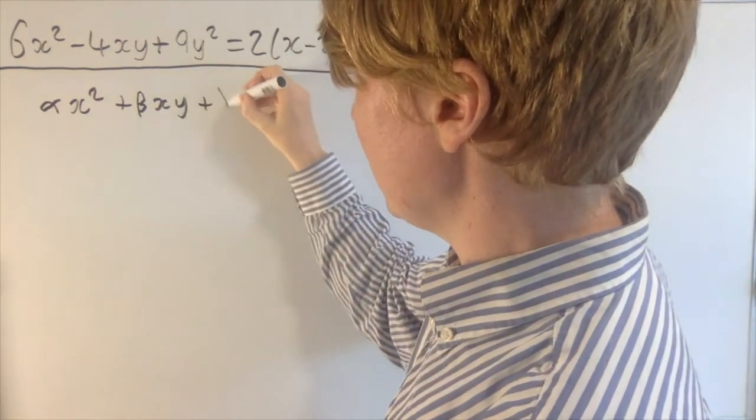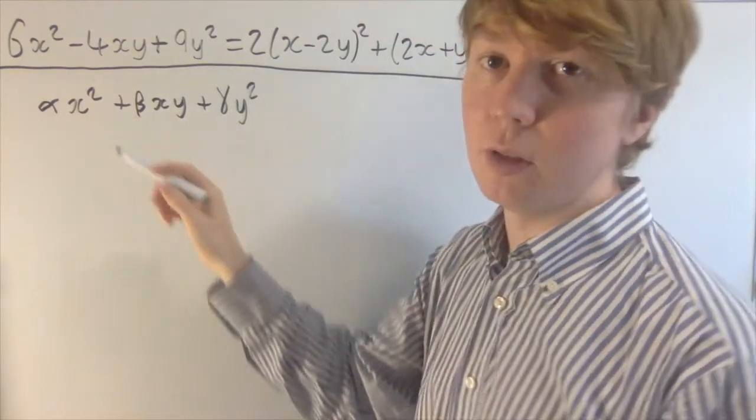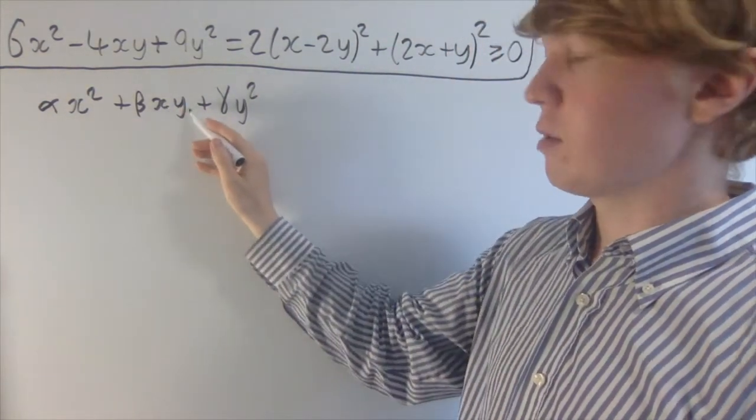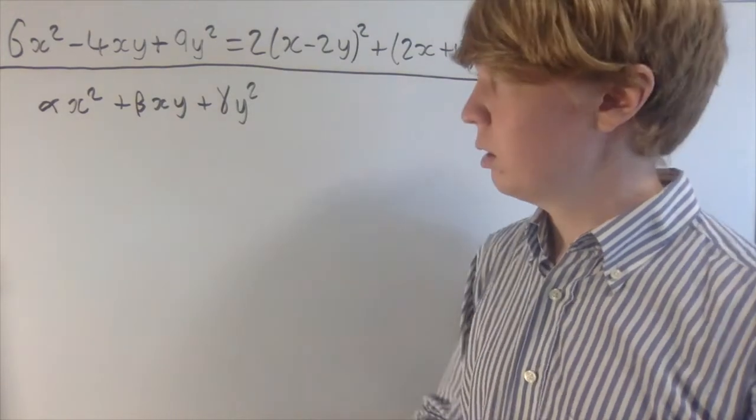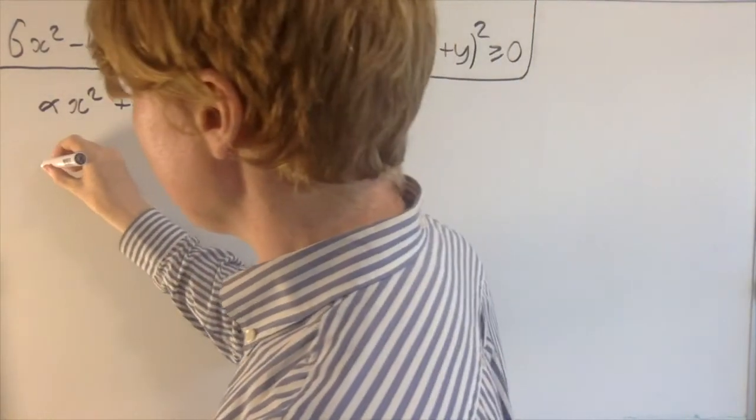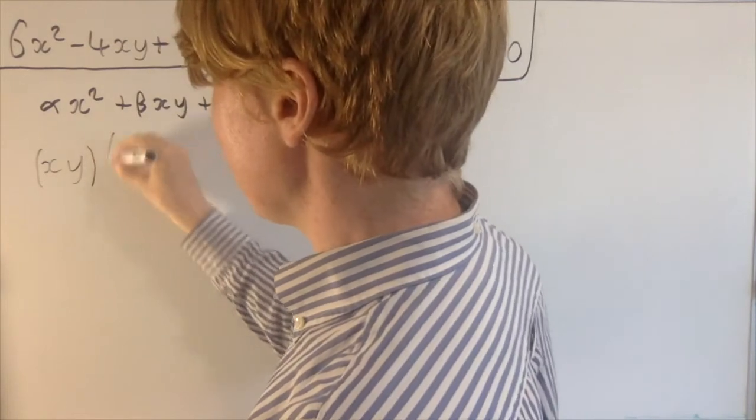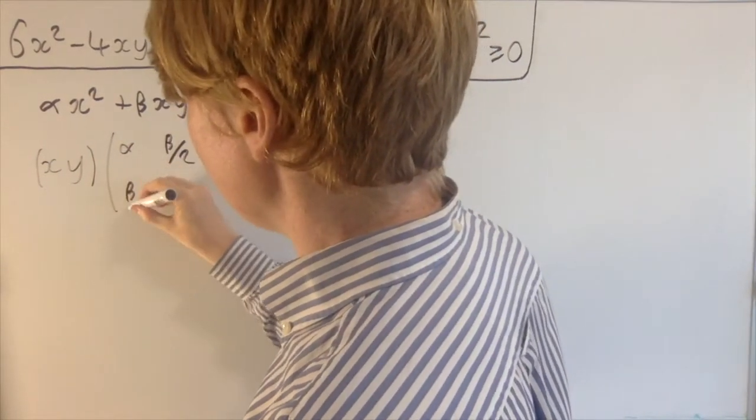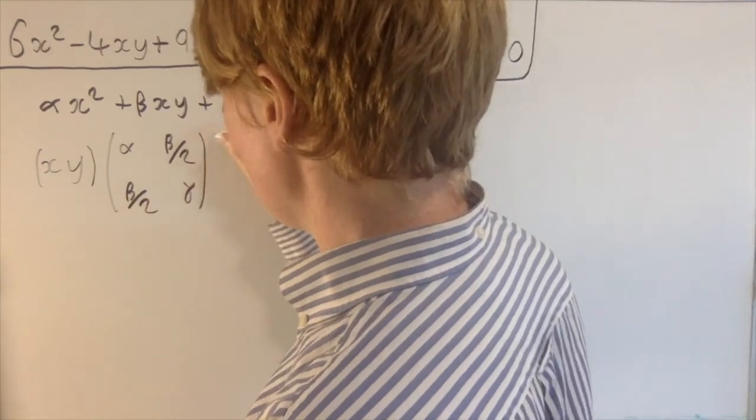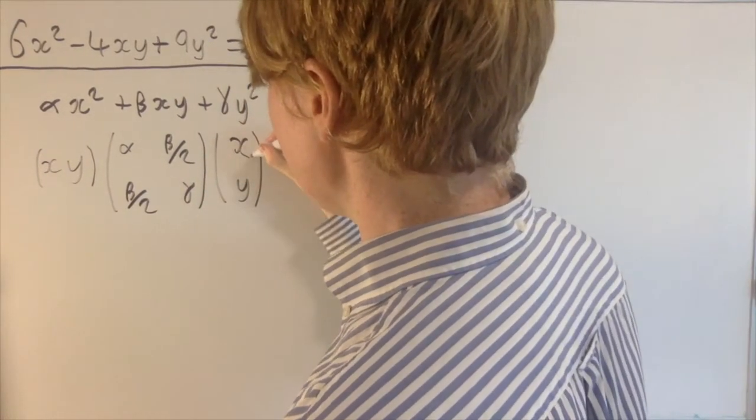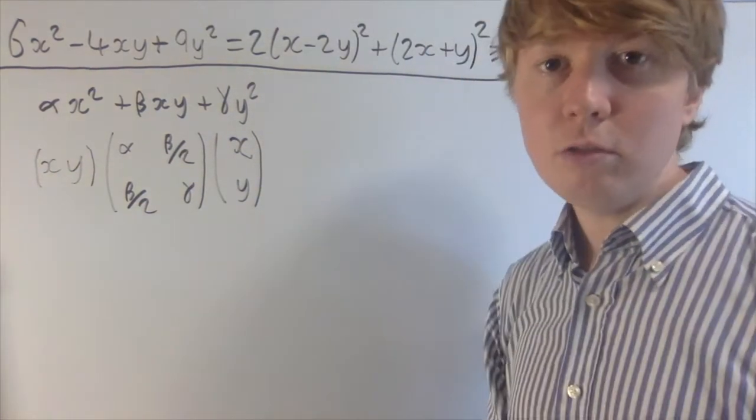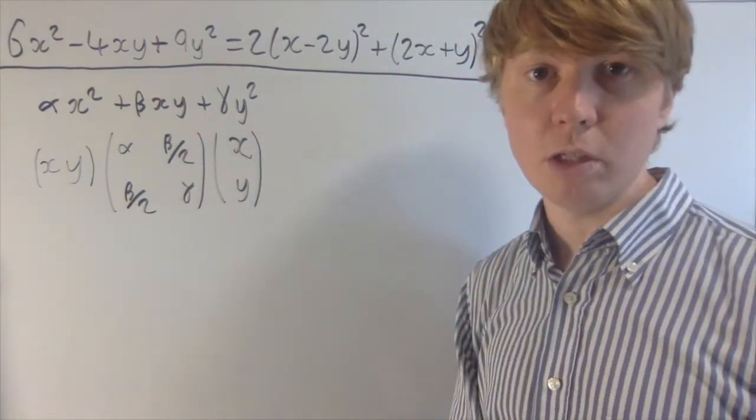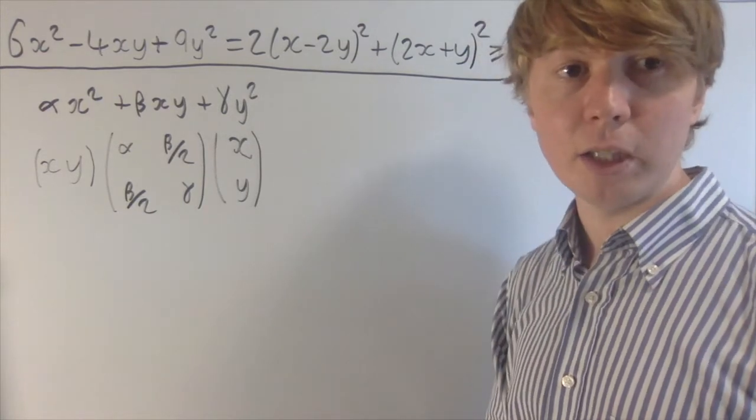And basically this relies on the fact that we've got what's called a quadratic form, so basically everything is of order 2 in a polynomial, if you count x and y as contributing 1 each. And this means that you can always write this as a product of vectors and matrices. So you've got alpha, beta over 2, beta over 2, gamma, just like we did at the start of this problem. And it's really important that I write it as a symmetric matrix where these two are equal to each other, because then I'm going to apply the spectral theorem.